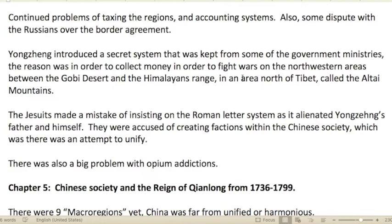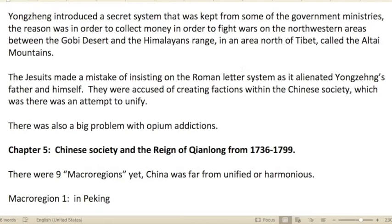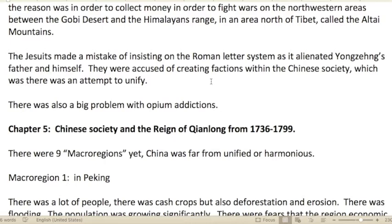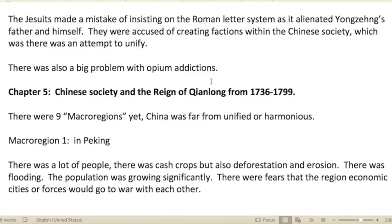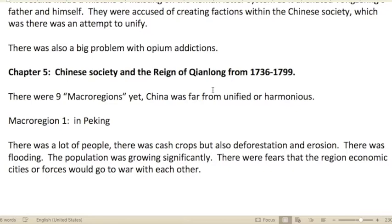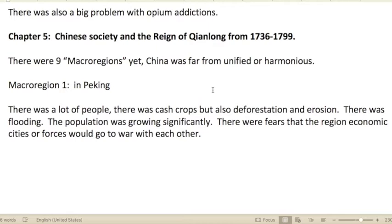There continued to be problems with taxation in the regions and struggles with developing a proper accounting system. There was also some dispute with the Russians over the border agreement. The new ruler Yongzheng introduced a secret system kept from some government ministries in order to collect money to fight wars in the northwestern areas between the Gobi Desert and the Himalayan range, and in the north of Tibet called the Altai Mountains.